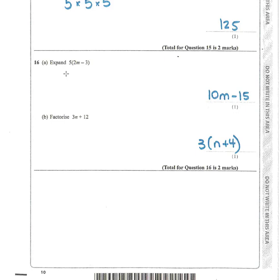Question 16: expand (2m − 3) × 5. Everything inside the bracket gets multiplied by 5: 5 times 2m is 10m, take away 5 lots of 3 which is 15. For factorising, you look at what factors 3n and 12 share — there's no letter in common, but both are in the 3 times table. So 3 goes outside the bracket: 3(n + 4). Expanding is the opposite of factorising.